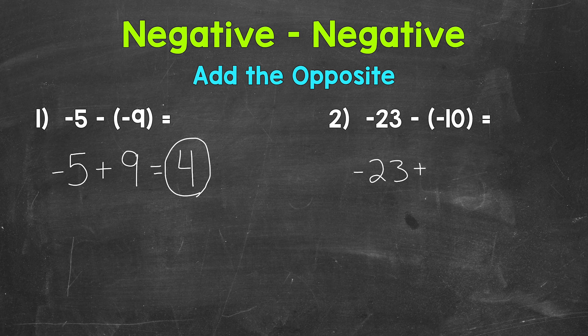The opposite of negative 10 is positive 10. So negative 23 plus 10. We are increasing in value by 10.